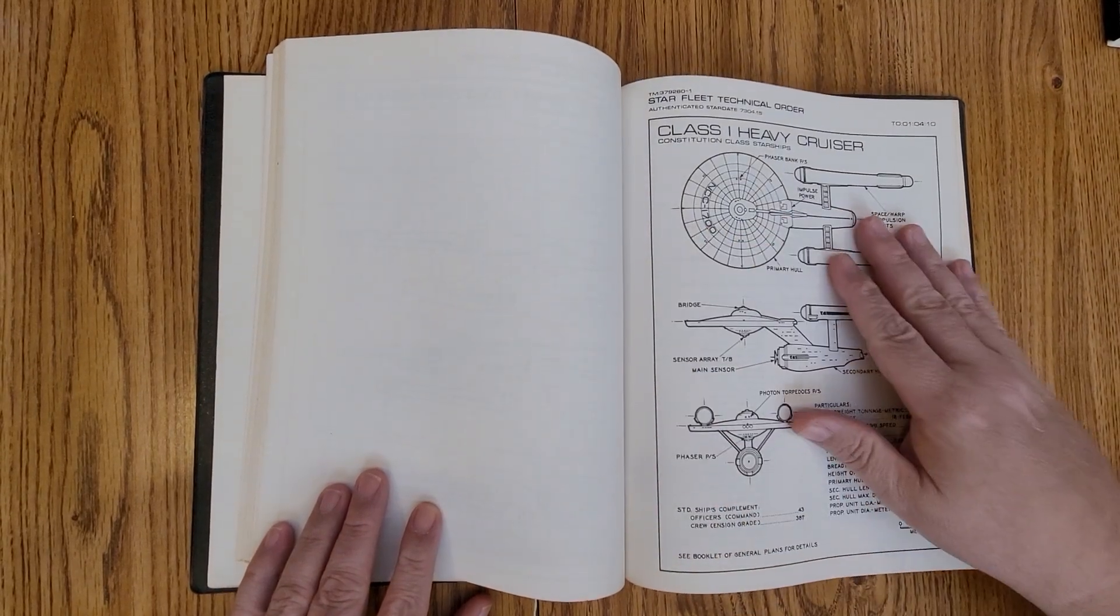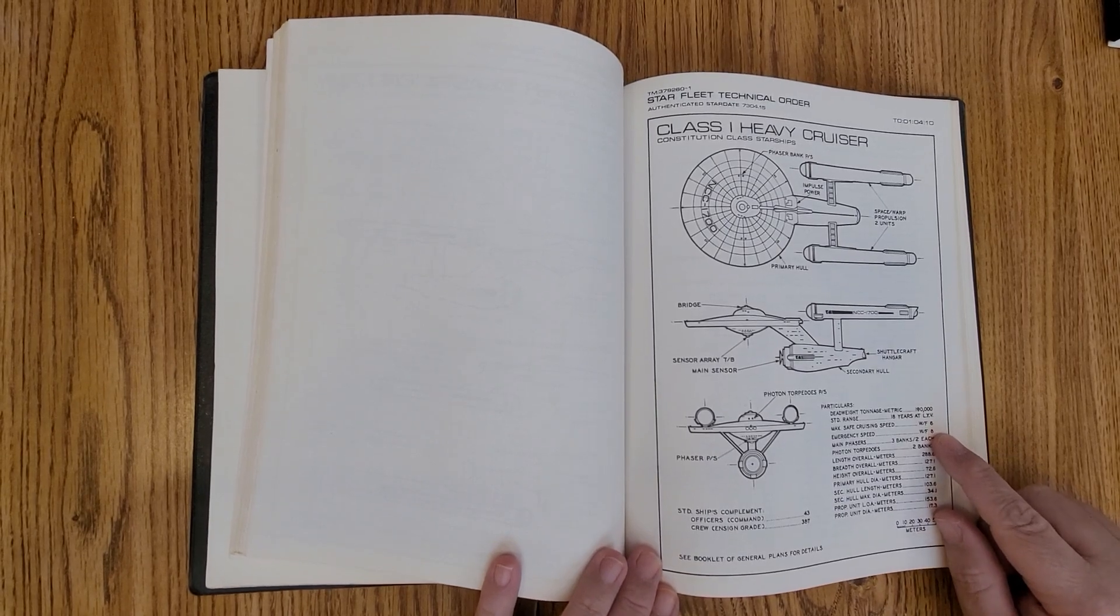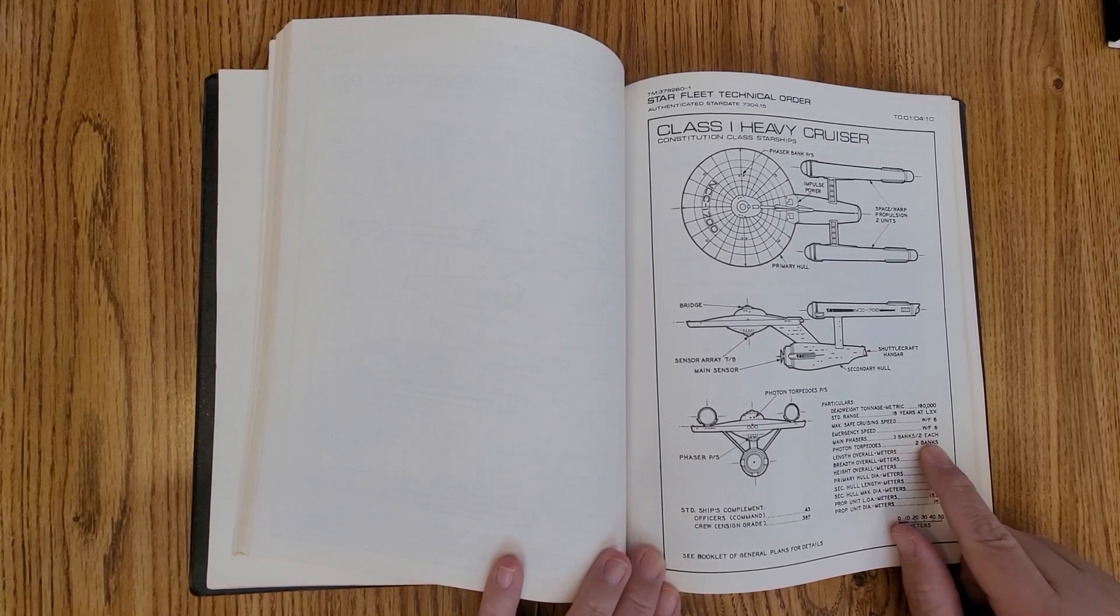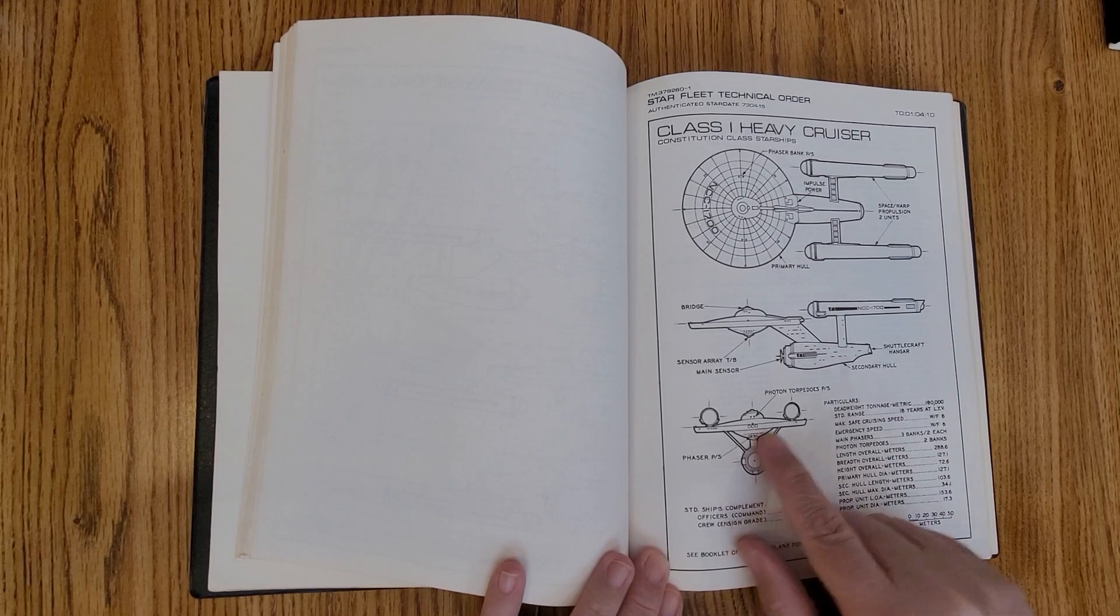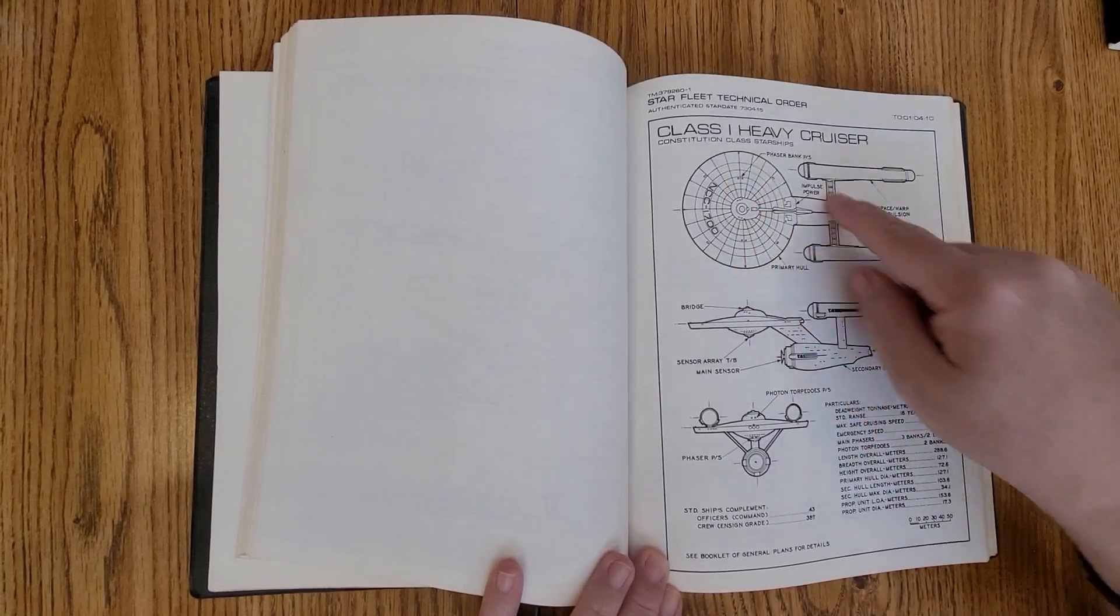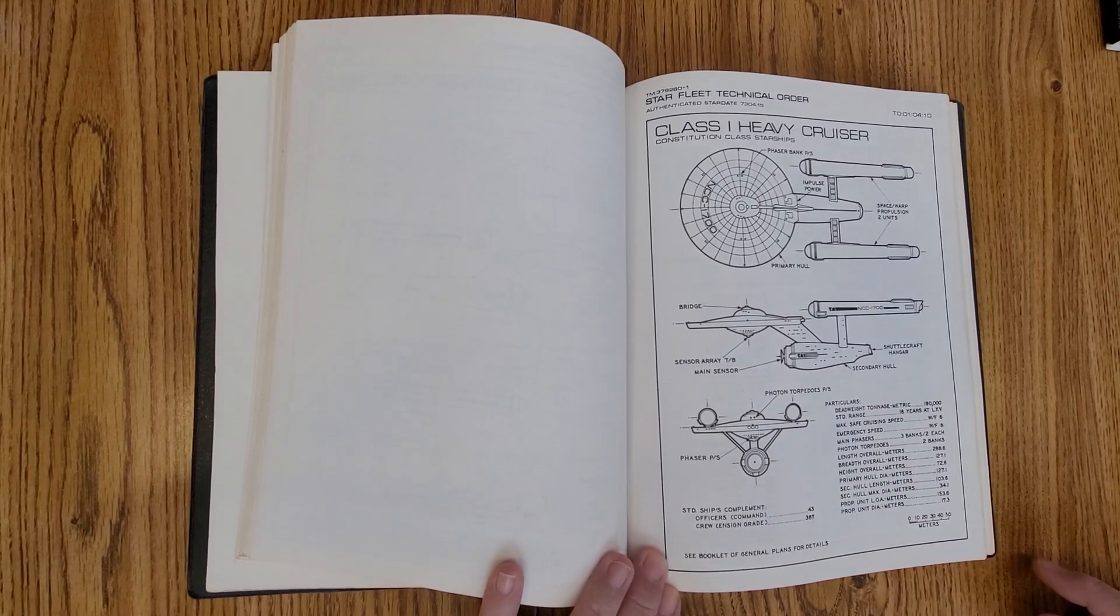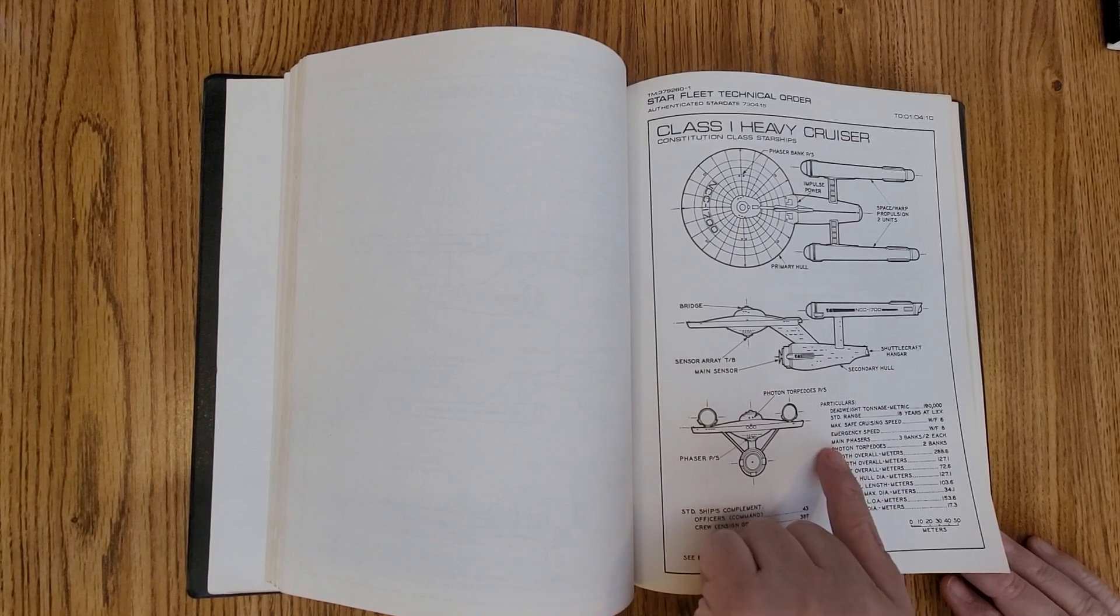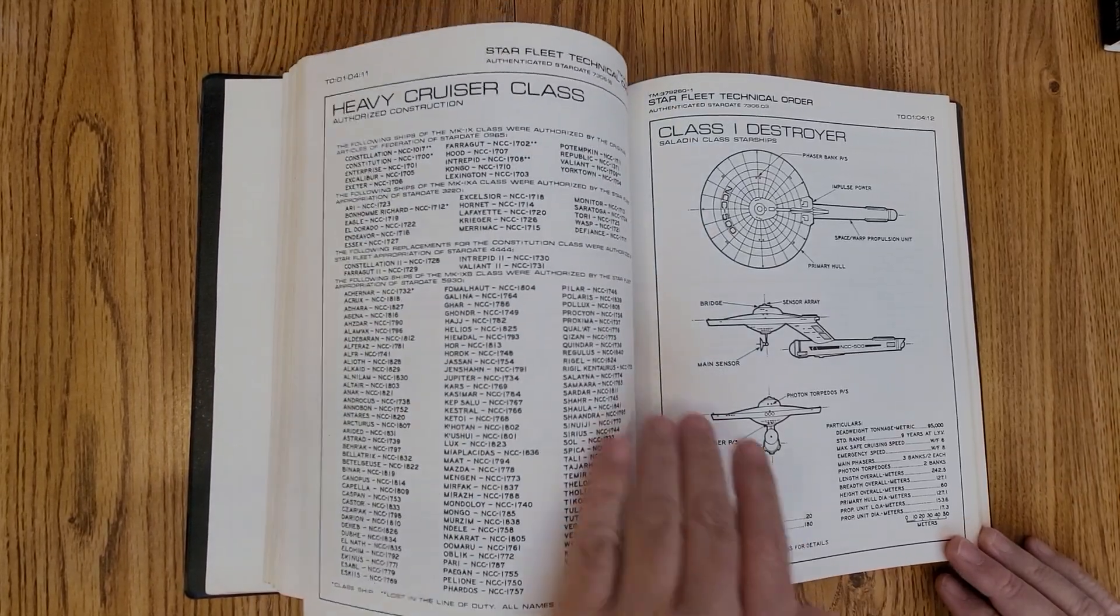Here it lists the heavy cruiser. And you can see cruising speed of warp six, emergency speed of warp eight, main phasers, three banks of two each. And you can see where they're showing you there's two phasers there. You can see two there and two there. There's the three banks, your photon torpedo launcher tubes up there. This is obviously the original before the refit. But it gives you all the information, two banks of the photon torpedoes.